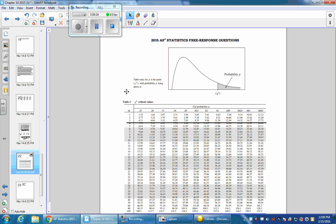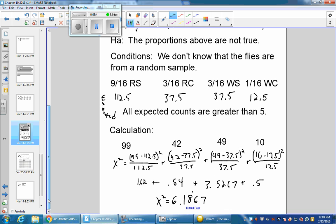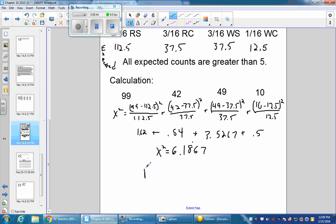Our value is 6.2-ish. We look along here until we get to 6.2. It's 6.18, so it's somewhere in here. I know my p-value is between 0.10 and 0.05. If I do my chi-squared CDF, I'm going to go from 6.2 to infinity with degree of freedom 3, and it's about 0.1 for our p-value.